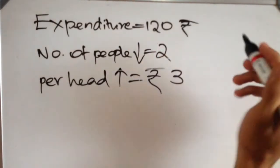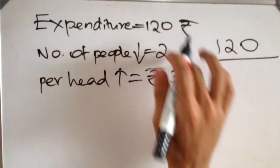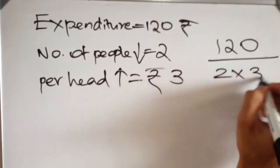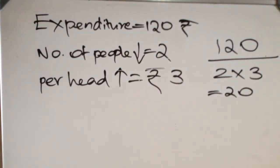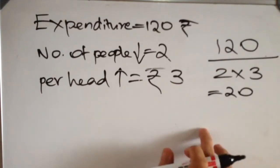So we have 120 divided by 2 into 3 and that would be 20. And 20 can be expressed as 4 into 5.